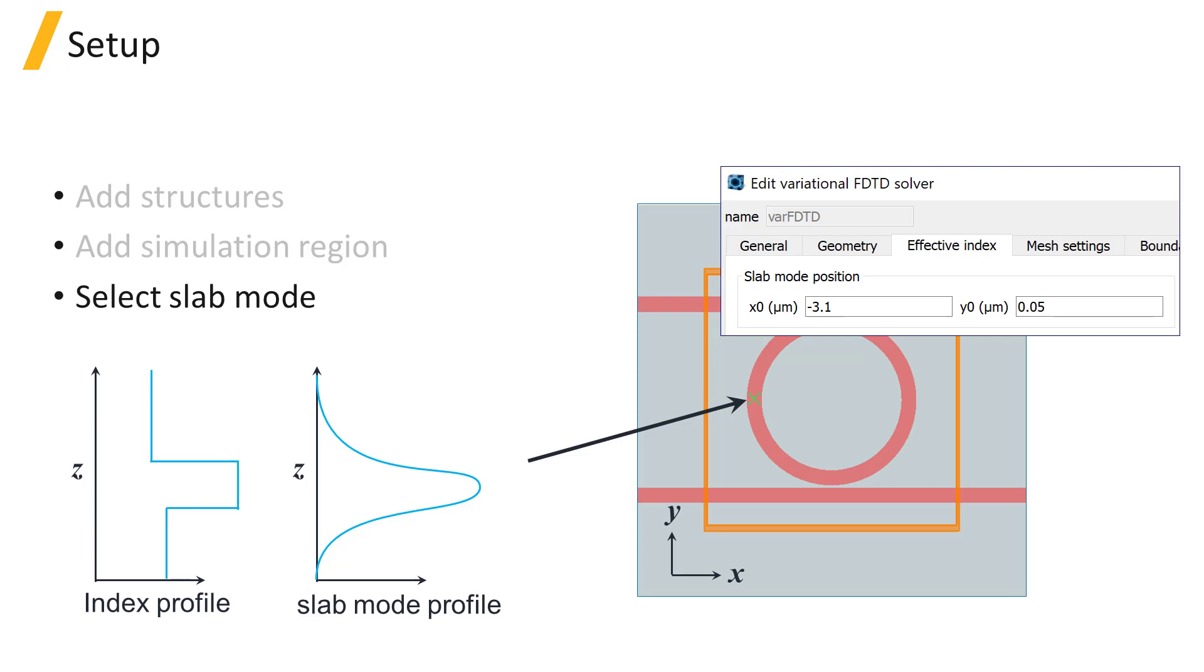A 1D finite difference eigenmode, or FDE calculation, is performed to find the supported slab mode, and we can plot the calculated slab mode profile as a function of Z in the effective index tab of the solver region. The solver region settings will be discussed in more detail in the next section of the course.